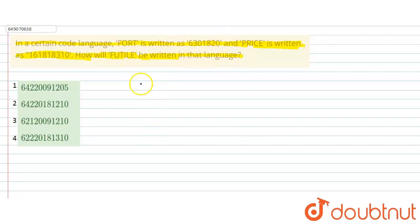So here we will see what logic is. F, O, R, T - this code is given as 6301820. How will futile be written in that language? So here we will see what logic is.